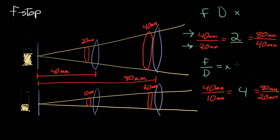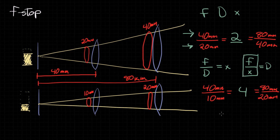F-stop is all about knowing how wide open to make the diameter, so we need a formula that gives us the diameter. We can write this as: f divided by x equals d. Remember, f-stop is about being able to know how wide open to make the diameter. So at this focal length, if we want this amount of light, we need a diameter of this size. This side of the equation might look familiar because the f-stop, or f-number, is often written as f/x, or with an actual number like f/2.